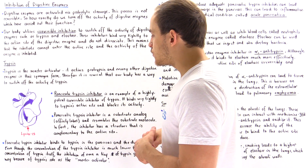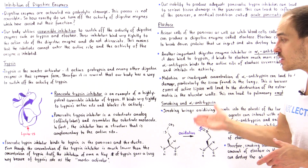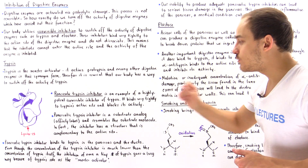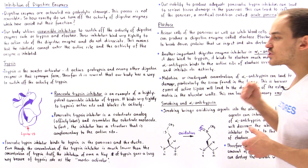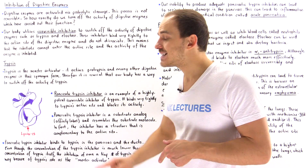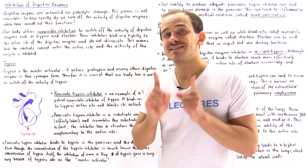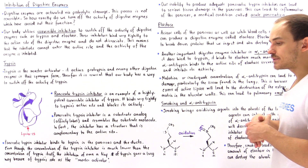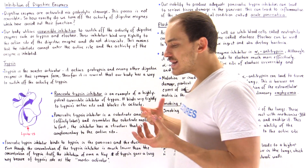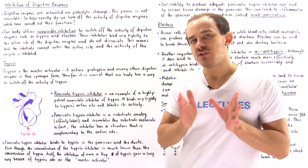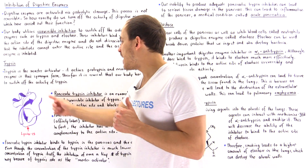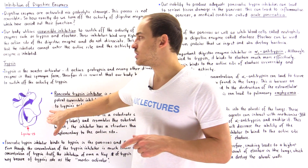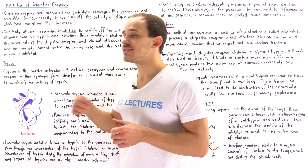Pancreatic trypsin inhibitor is a substrate analog, also known as an affinity label, and resembles the structure of the substrate molecule — its structure is essentially complementary to the active site of trypsin. Inside our body, we have a relatively low concentration of pancreatic trypsin inhibitor compared to the concentration of trypsin itself.